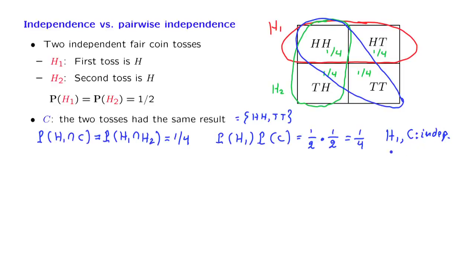By the same arguments, h2 and C are going to be independent — it's a symmetrical situation. h1 and h2 are also independent from each other. So we have all the conditions for pairwise independence.